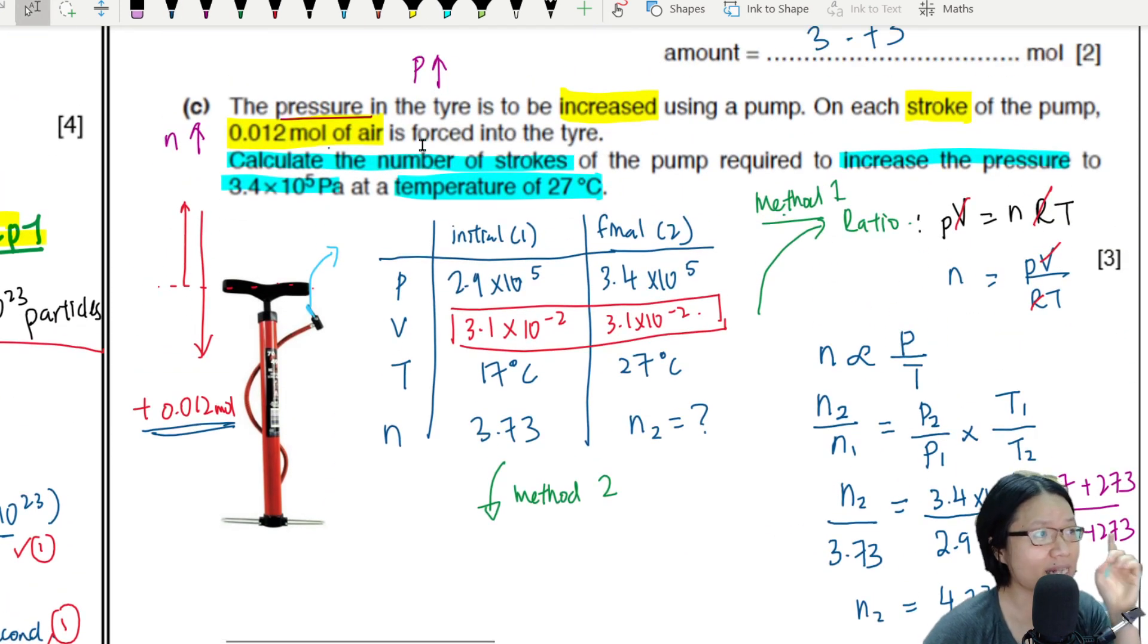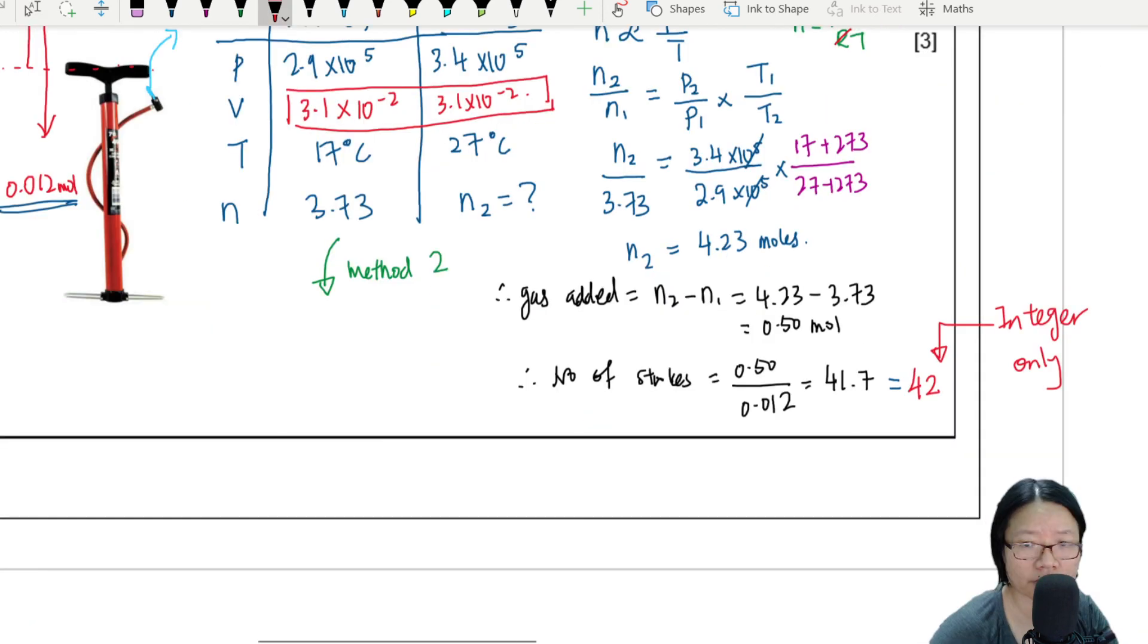Because you read the question, it says number of strokes. So you need to have integer values only. Okay, so the number of strokes must be integer. Your answer must be 42.